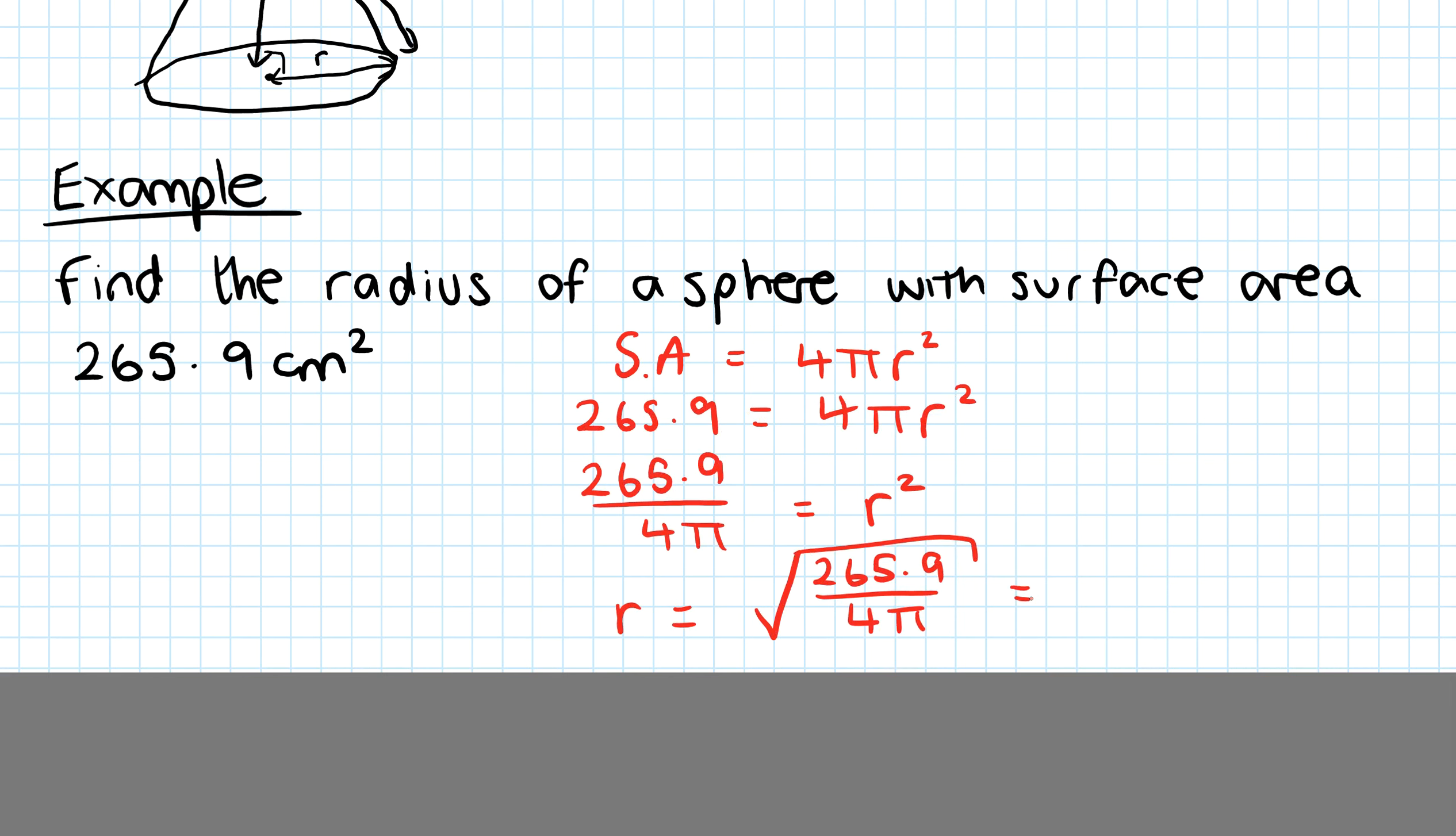Take your calculator and find the answer. My calculator gives 4.599961922, so to one decimal place that would be 4.6 centimeters for the radius.